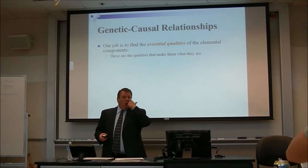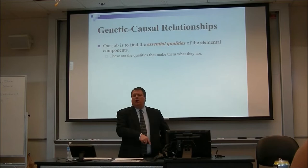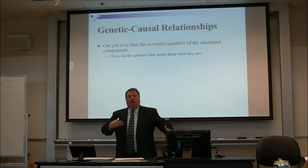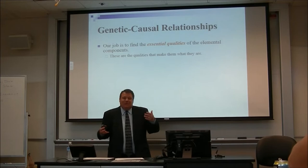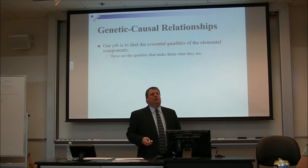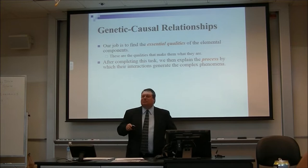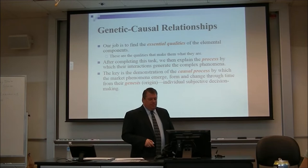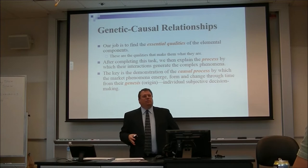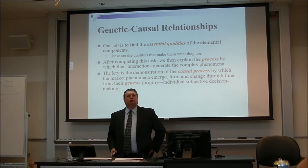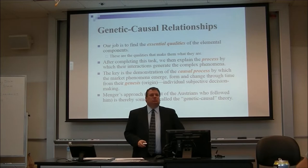Our objective is to find the essential qualities of elemental components — the qualities that make them what they are. In economics, what's the smallest unit? It's the individual. If I lop off my arm and ask it what it wants for breakfast, I'm not going to get an answer. So the smallest unit is the individual, and that's where we start. After we look at what the essential qualities are, we ask: what is the process by which these interactions generate complex phenomena? The key is the demonstration of the causal process by which market phenomena emerge and change from their origin — that's the individual, subjective decision-making we're looking at.